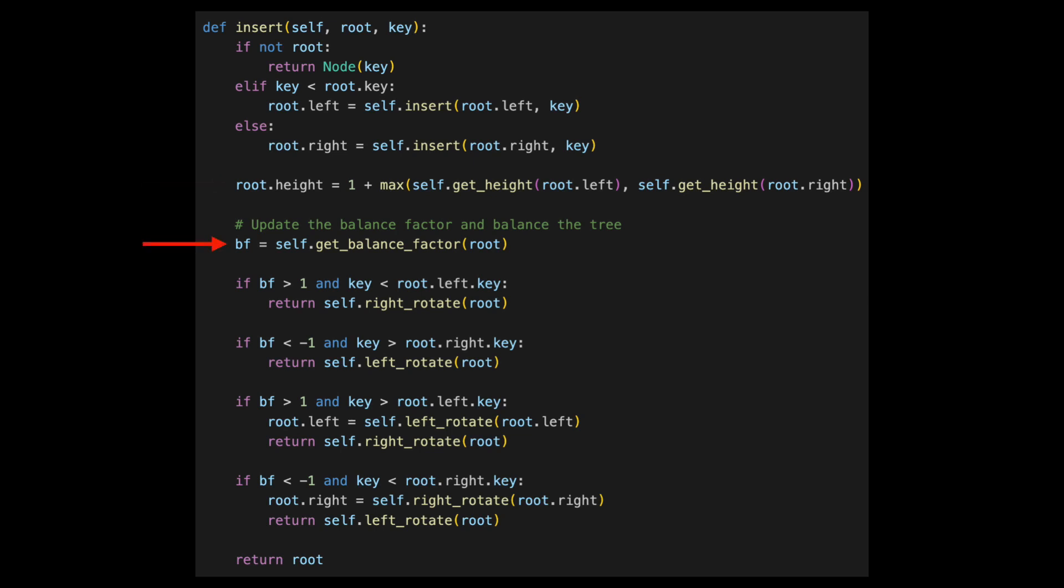We set the height of each node one greater than the max of its left and right children. We update the balance factor, taking the height of its left child and subtracting the height of its right child. Finally, we check for our four fixes we discussed in this video.